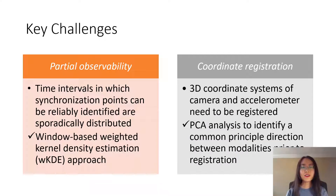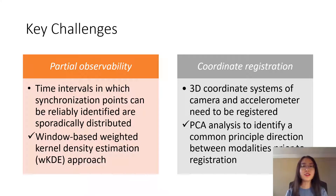The automatic synchronization method we propose addresses two technical challenges. Partial observability refers to the fact that the time interval in which synchronization points can be reliably identified are sporadically distributed. We address it via a window-based kernel density estimation approach. The second challenge of coordinate registration arises when the two sensors are not rigidly mounted and output data with respect to two separate 3D coordinate systems. We address it by using PCA analysis to identify a common principal direction between modalities prior to registration.